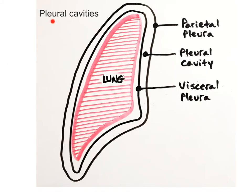Each of the two pleural cavities contains a serous membrane called the pleura. The parietal pleura lines the chest wall and covers the superior surface of the diaphragm. The visceral pleura attaches to the surface of the lungs. The pleural cavity is located between these two layers and contains a small amount of lubricating fluid.